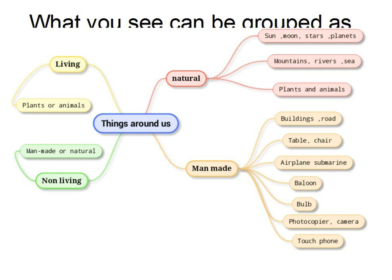What are living things? Plants and animals are a type of natural things called living things. What are non-living things? The man-made things or the natural things like sun and mountain are called non-living things.